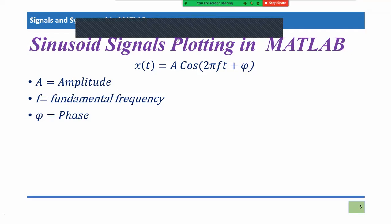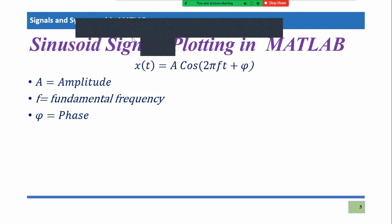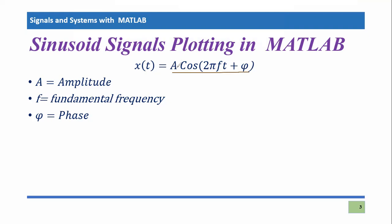This video tutorial is the starting tutorial of Signals and Systems with MATLAB. In this tutorial, I'm going to show you how to plot a sinusoidal signal in the MATLAB environment. For a sinusoidal signal, we have already learned in theory classes that x(t) = A·cos(2πft + φ), where A is the amplitude, f is the fundamental frequency, and φ is the phase of the signal.